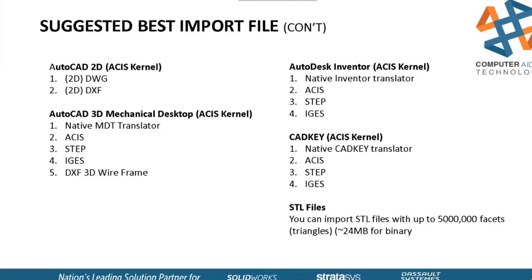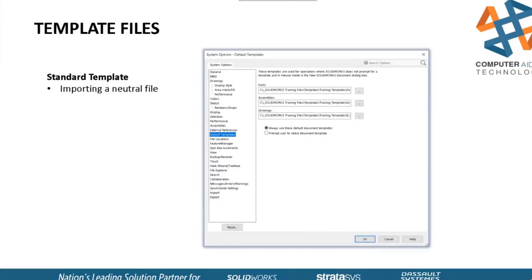Whenever you open a standard file, your default templates — in SolidWorks System Options — will pull in using one of these formats. There are two radio buttons: one says 'always use this default,' so when you open a translation file it automatically pulls one of these templates. If you choose the second radio button called 'prompt,' it will prompt you to pick a template from whatever templates you have in your file locations.